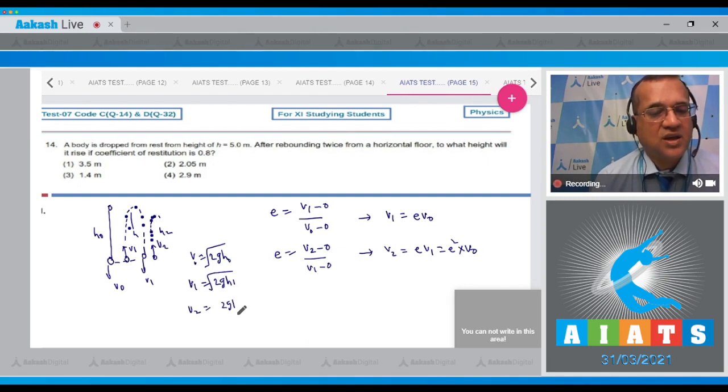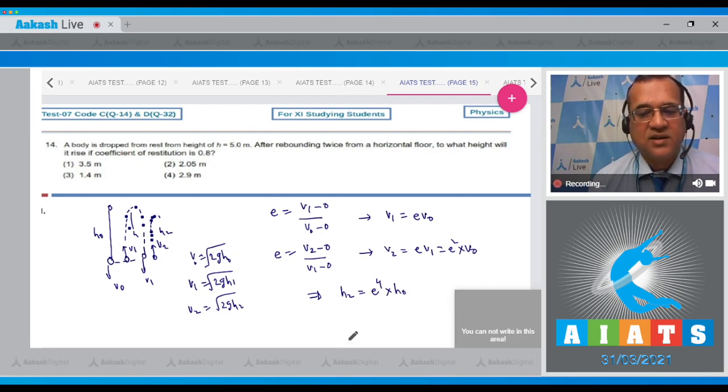So you can see that your height h₂ equals e⁴ into h₀. So we will fill the values: this is 0.5⁴ into h₀ which was 5. So 8 by 10, 8 by 10, and you take 5 times, you get 2.05 meters. So the correct option is option number 2 to this question.